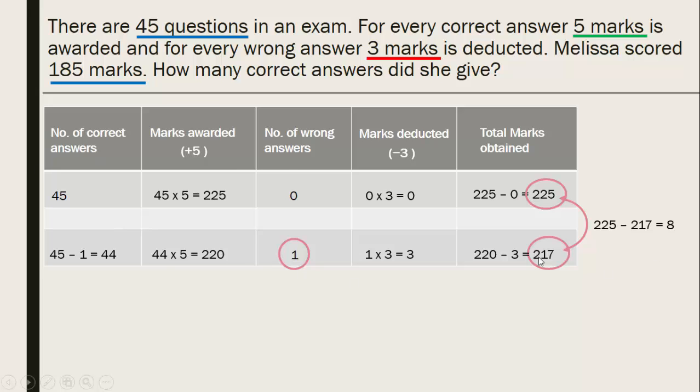So what we see from here or understand from here is that for every mistake that Melissa makes, she's going to lose 8 marks. So one wrong answer loses 8 marks. Two wrong answers, she's going to lose 2 times 8, which is 16 marks.